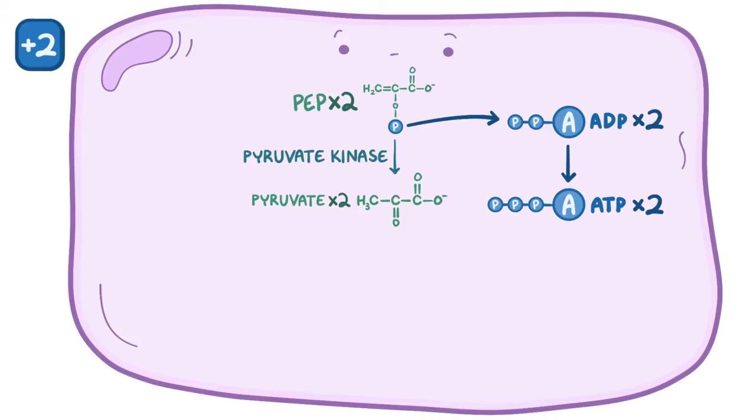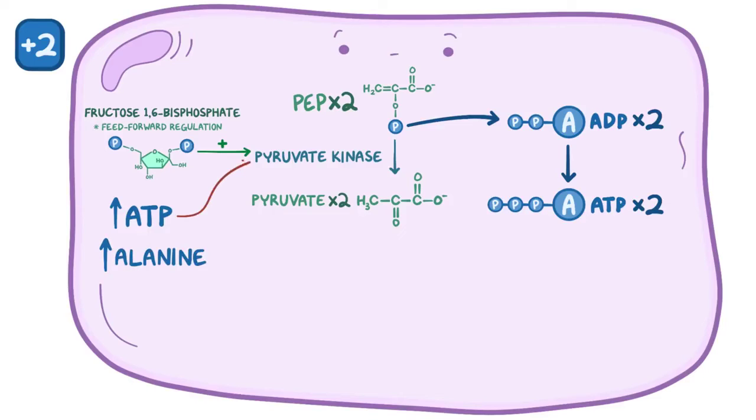As it turns out, pyruvate kinase is also regulated by the cell. Interestingly, fructose-1,6-bisphosphate upregulates pyruvate kinase, a process called feedforward regulation because it's kind of like one enzyme priming another one because it's clear that things are about to get busy. On the other hand, high levels of ATP and the amino acid alanine downregulate pyruvate kinase activity. Alanine comes from skeletal muscle breakdown when fasting, and it's used as a substrate for making new glucose. So high levels of alanine signify that the body needs to make new glucose, not break it down in glycolysis.